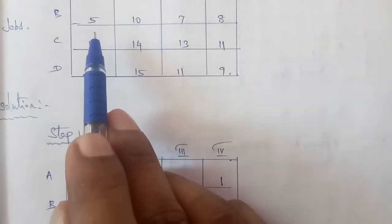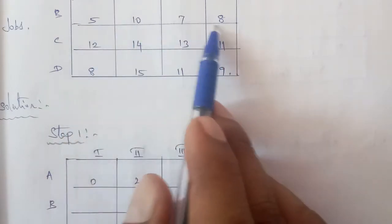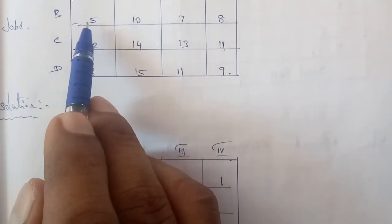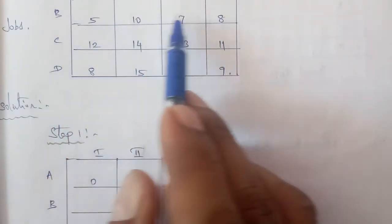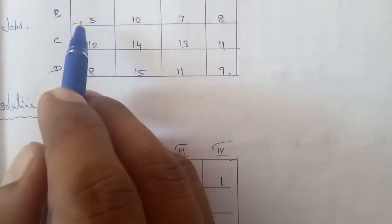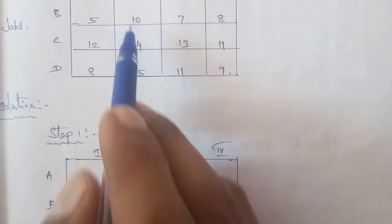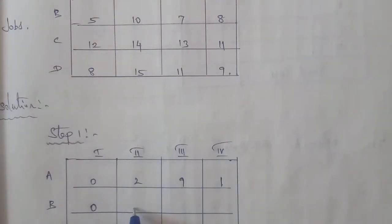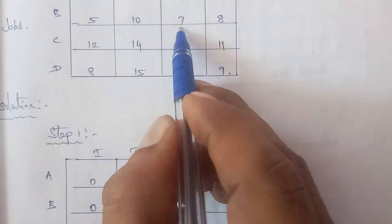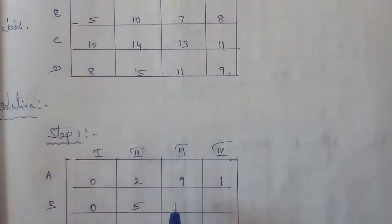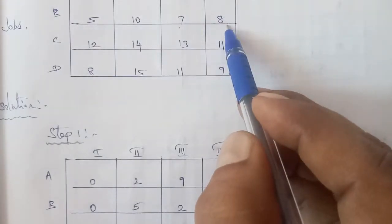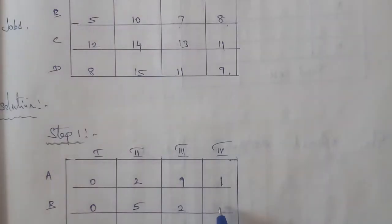Second row: find the least number. The least number is 5. Subtract 5 from each element: 5 minus 5 equals 0; 10 minus 5 equals 5; 7 minus 5 equals 2; 8 minus 5 equals 3.